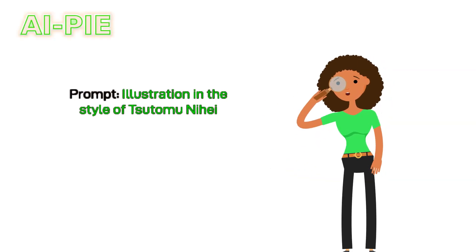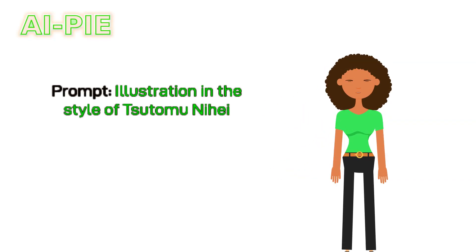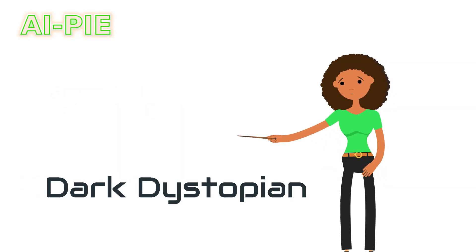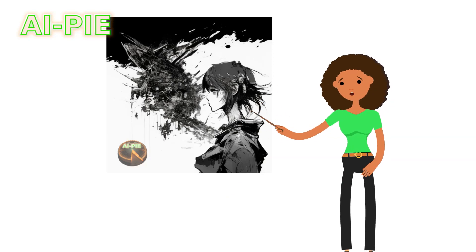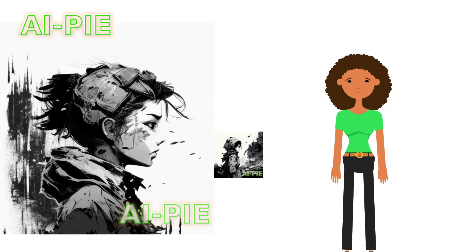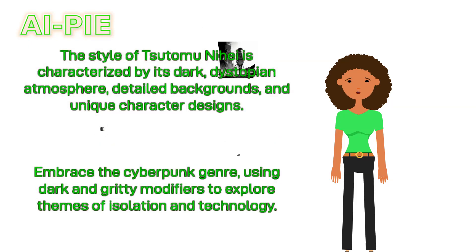Moving along, we will now look at illustration in the style of Tsutomu Nihei. Tsutomu's style is characterized by its dark, dystopian atmosphere, detailed backgrounds, and unique character designs. The style of Tsutomu Nihei explores themes of isolation, technology, and the future of humanity.